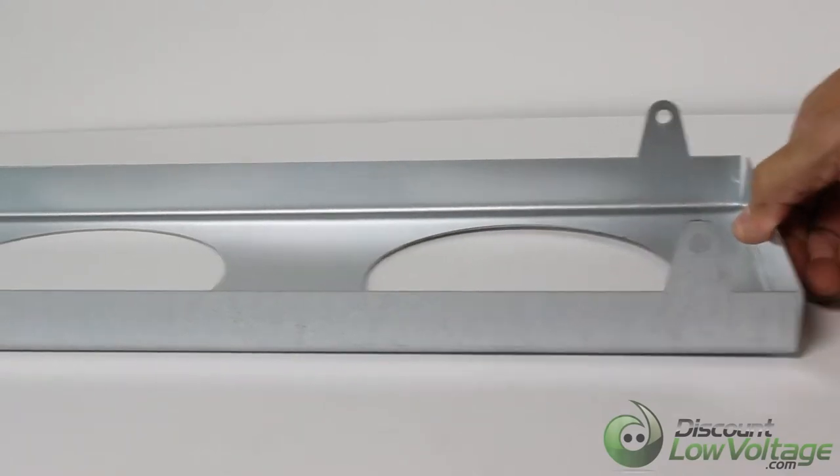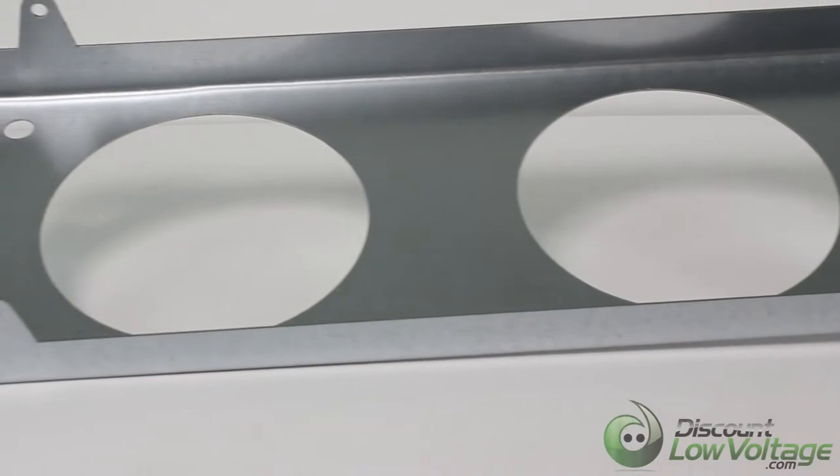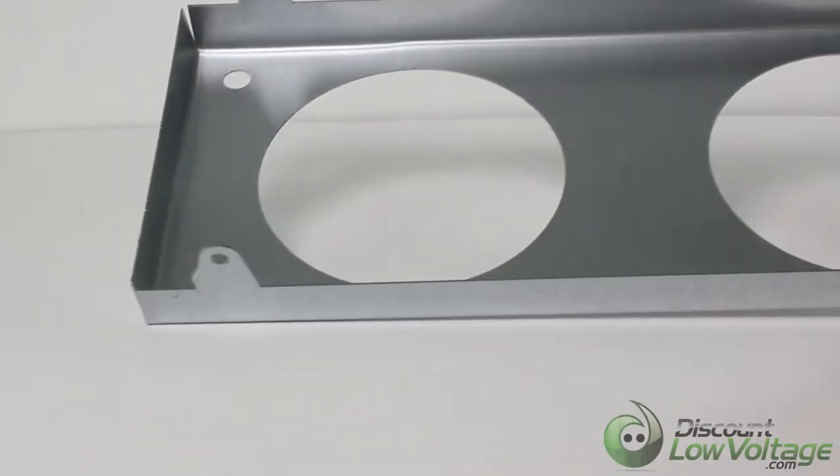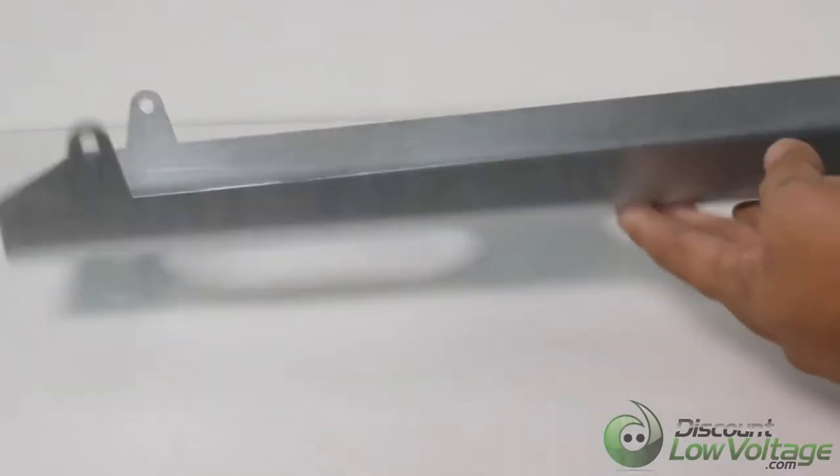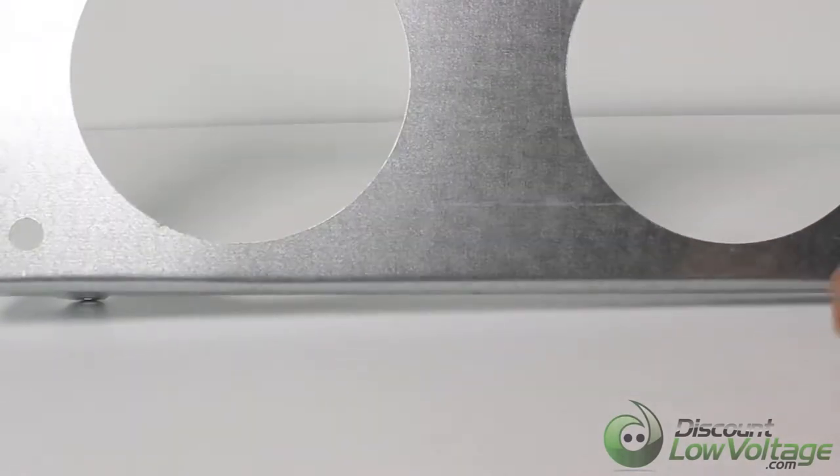This cable penetration half-lip comes with one 4-inch riser tube and can hold up to three total. Additional riser tubes are available using part number CTS-CPP-4-R.